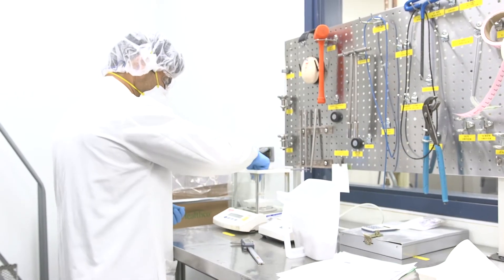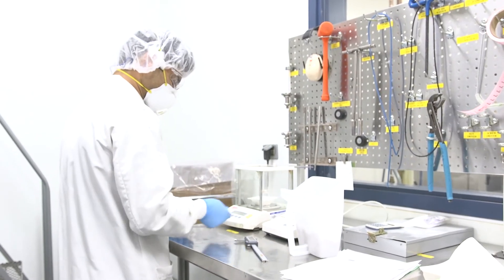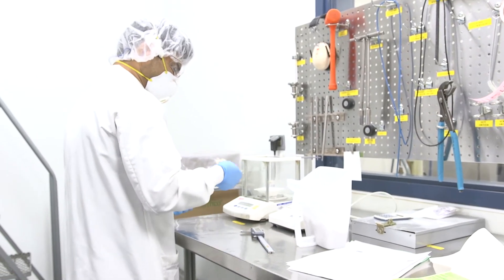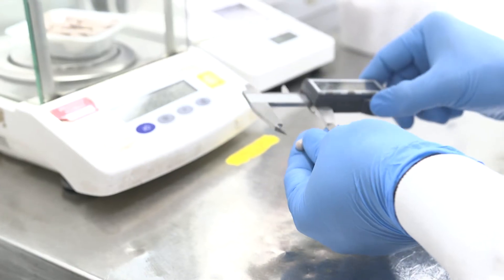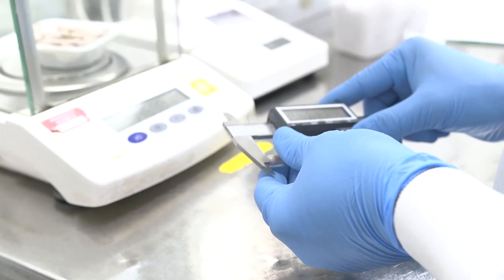The operators are using statistical process control. They have weights that they have to stay between, a high and a low end weight, and so every hour they're pulling samples and checking to make sure that they're within those weights. QC will also go in and do independent checks on the weights to make sure that the capsules are closed, to make sure that the weights are within the prescribed range. And at that point the material is then boxed up and it's moved over to our packaging line.